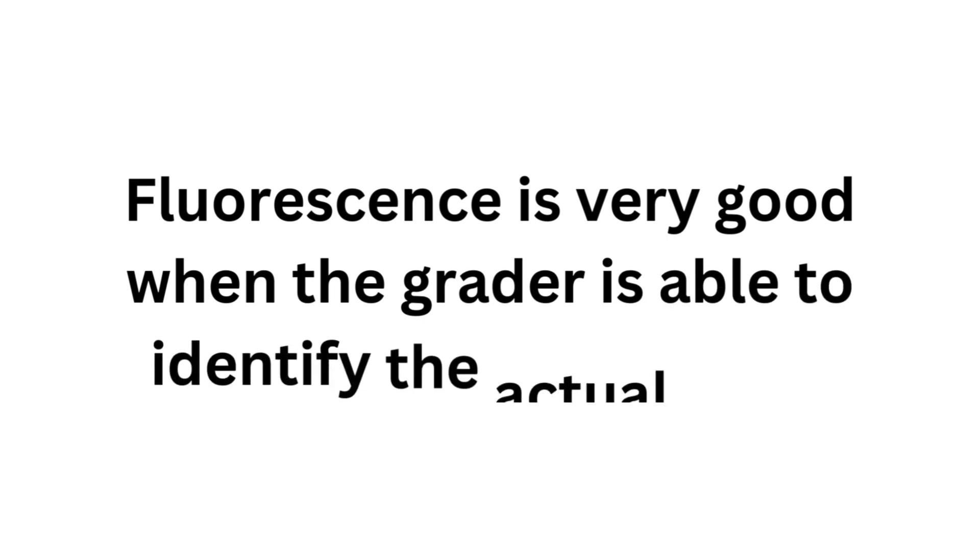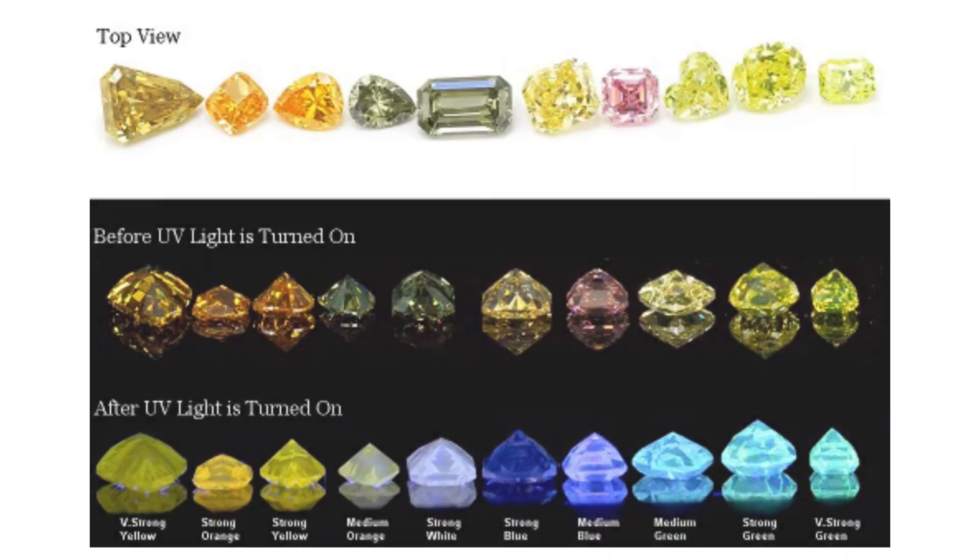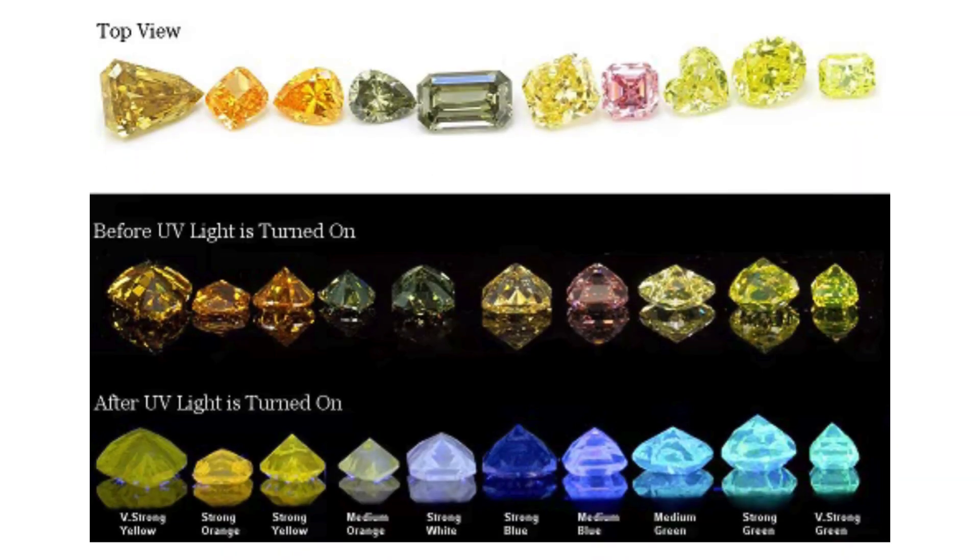Fluorescence is beneficial when the grader is able to correctly identify the actual color of the stone. For example, if a stone is J color, the grader should recognize it as J and not misjudge it as G due to the fluorescence. The benefit is that a J-colored stone can also look like an H-colored stone, allowing a buyer to pay less while getting the same visual finish. However, this is a difficult task, as even graders can get confused, which is why stones with high fluorescence are not always encouraged.